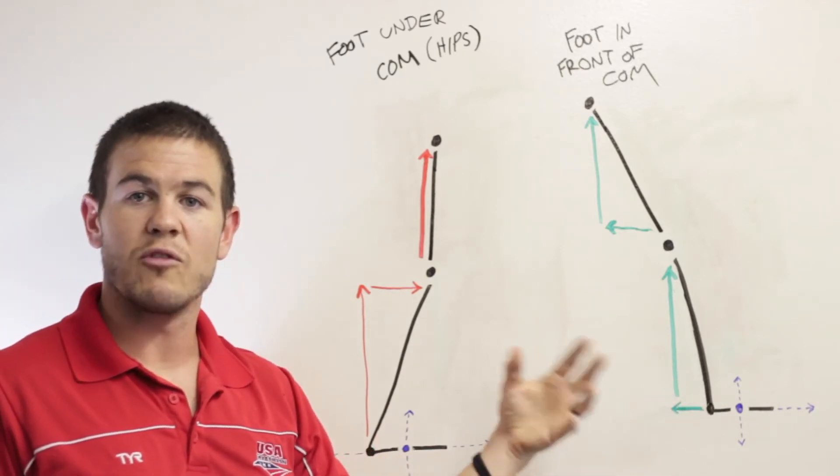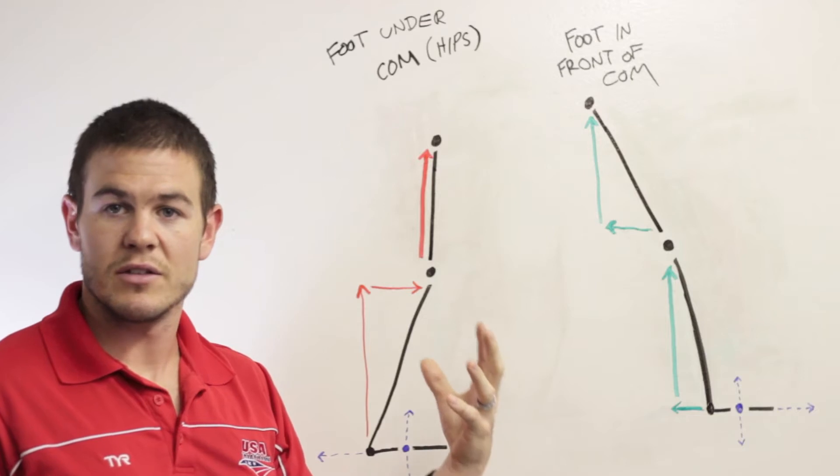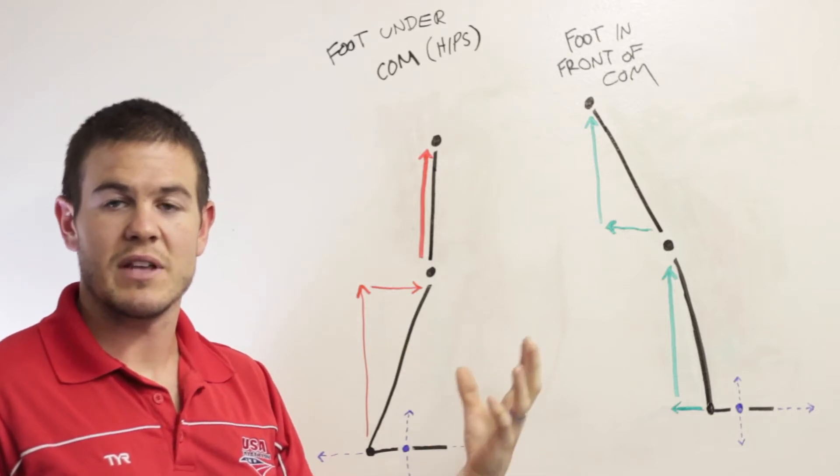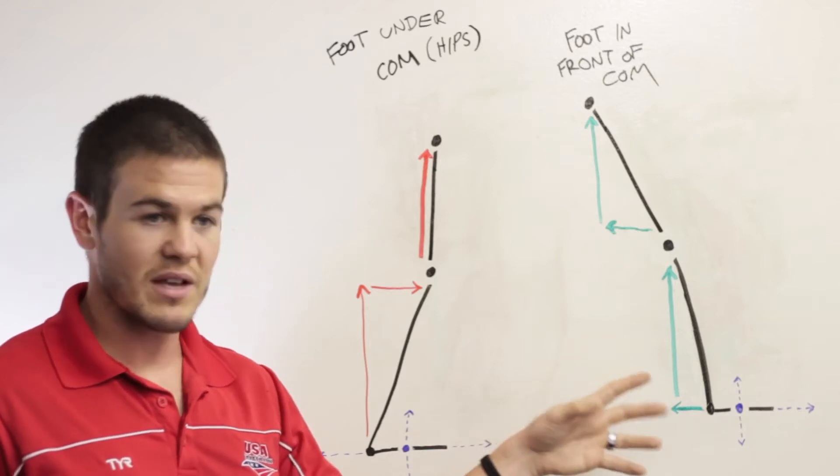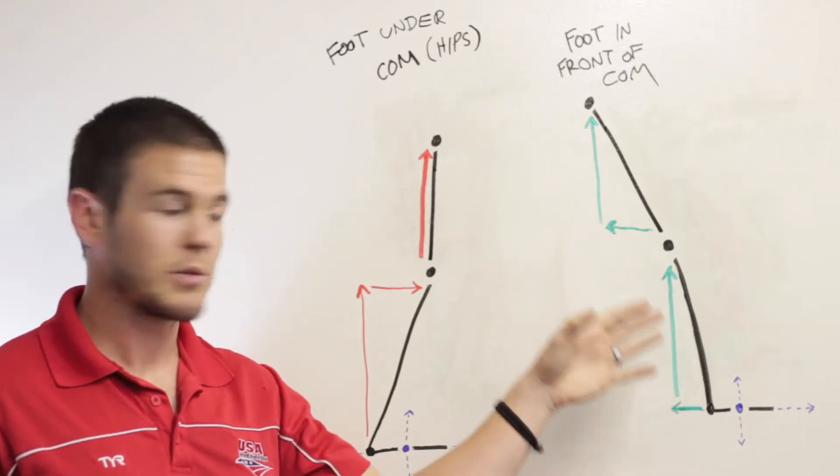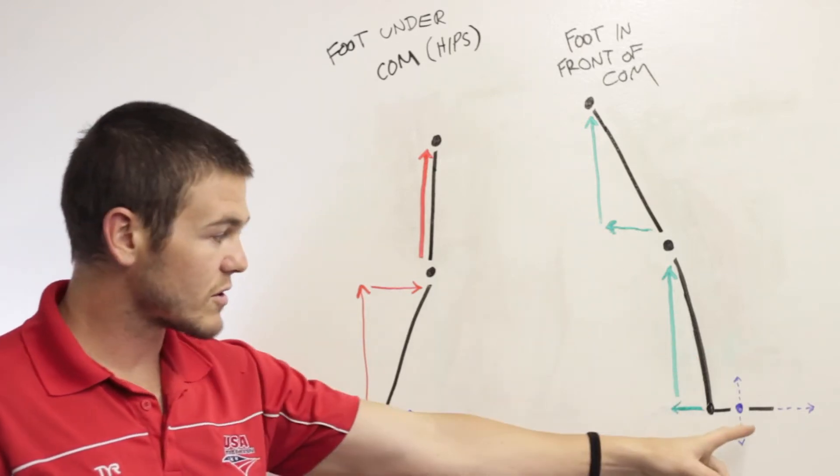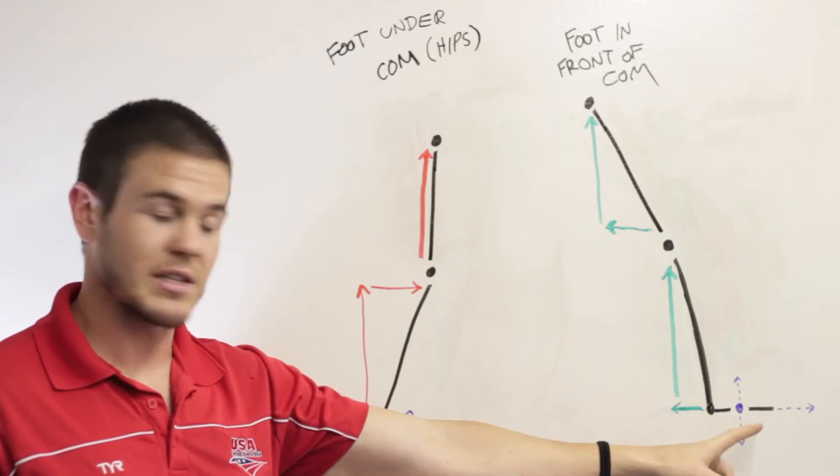So when we think of how force is applied to a leg, we have to think of it as a system. We can't think of it as a rigid object. So we have to think of how the force is applied to each part of the system. So first, obviously, the first thing that contacts the ground is your foot.